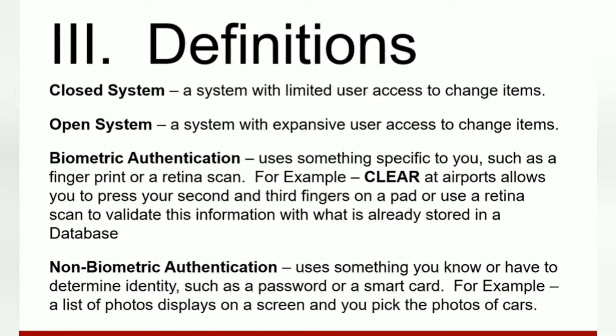A closed system is a system that has limited user access to get into the system and make any types of changes — it's very restrictive. An open system, on the other hand, allows the user to make all types of changes. Biometric authentication identifies who you are using something like a fingerprint or a retina scan — for example, when you go through CLEAR at the airport, you can use a fingerprint or retina scan to authenticate against information stored in a database.